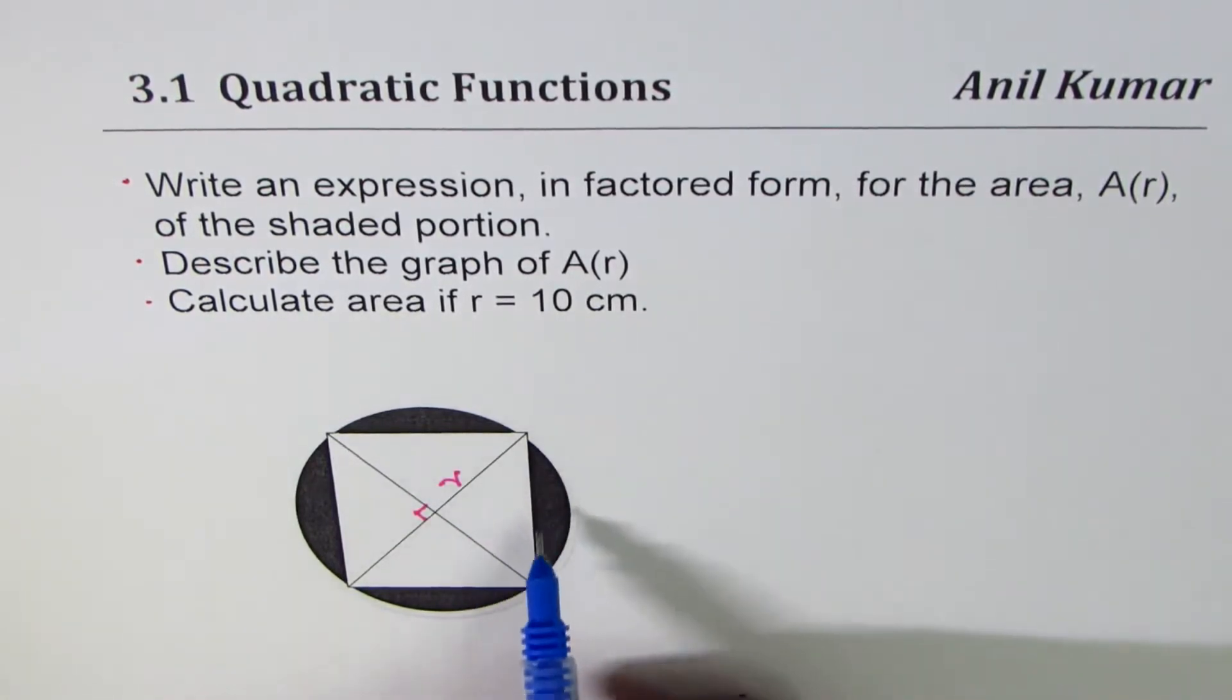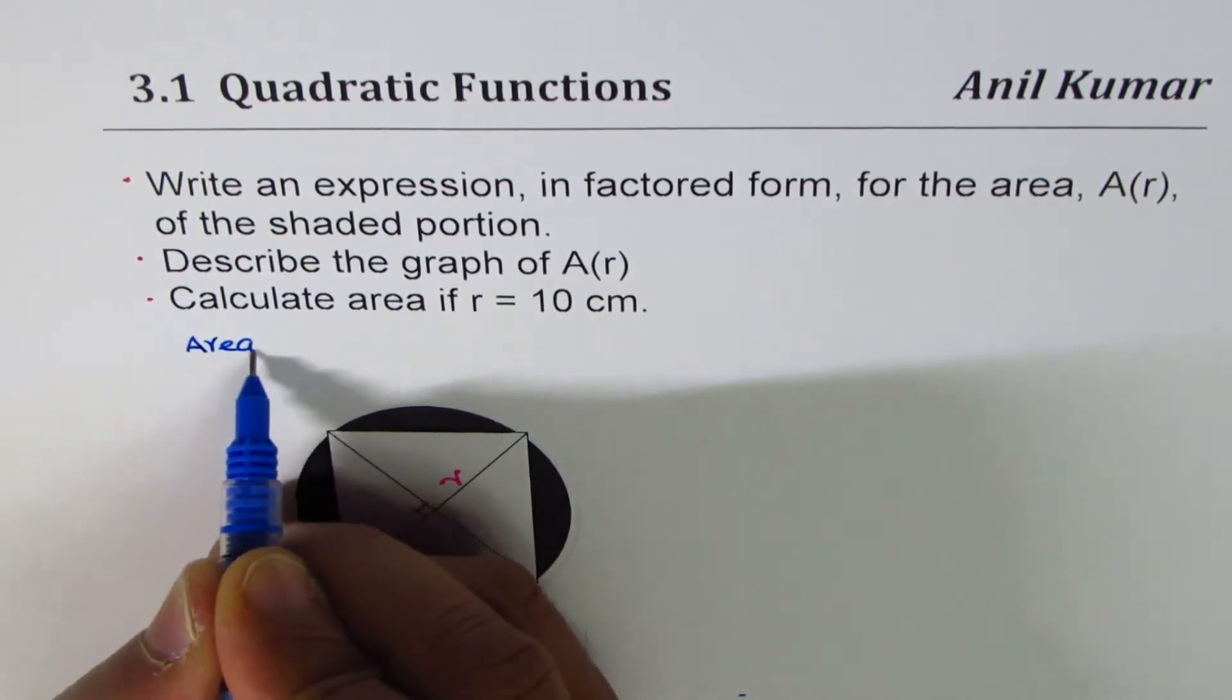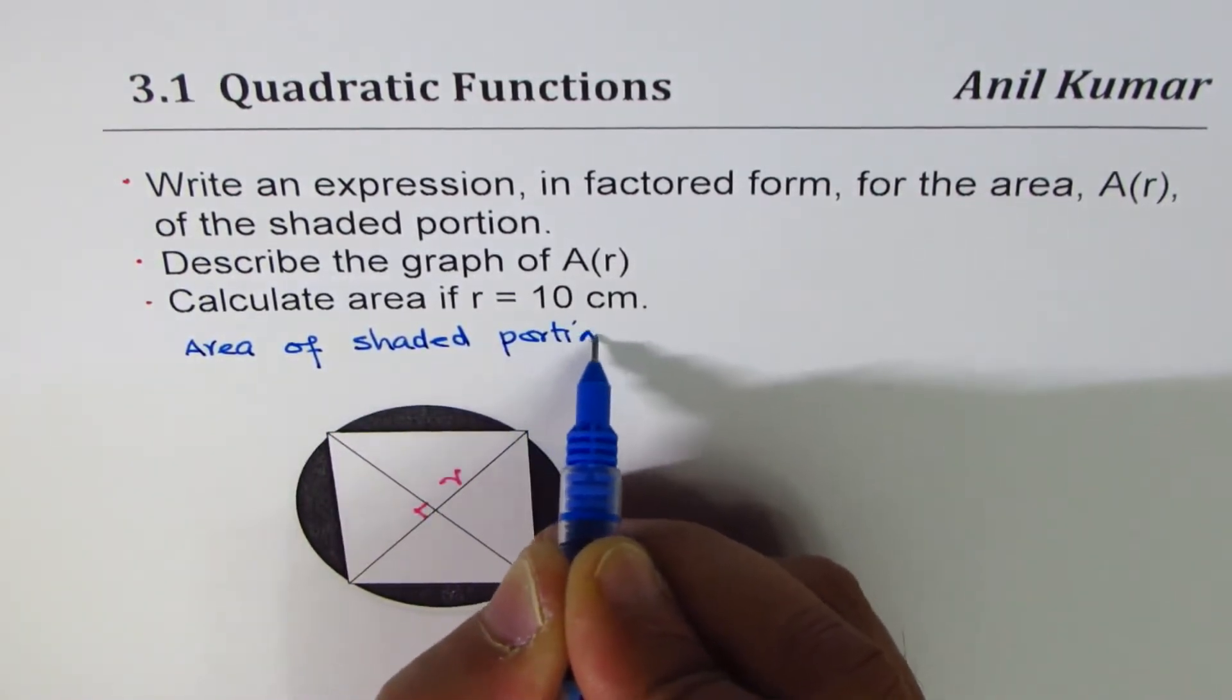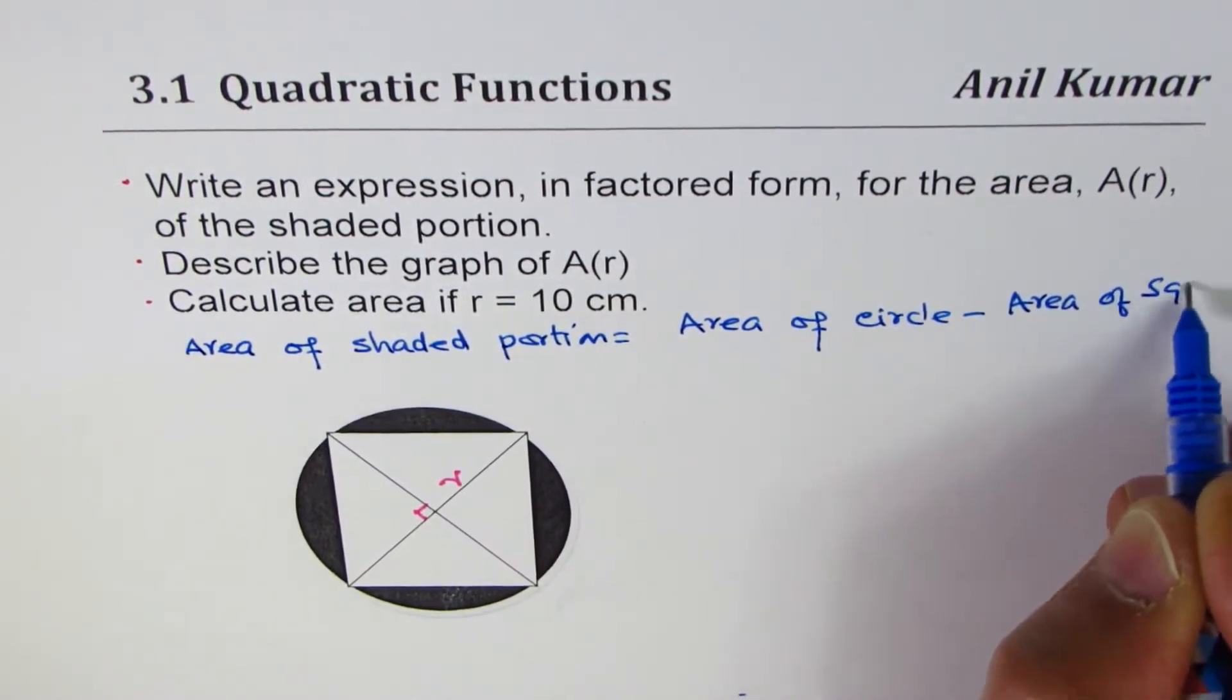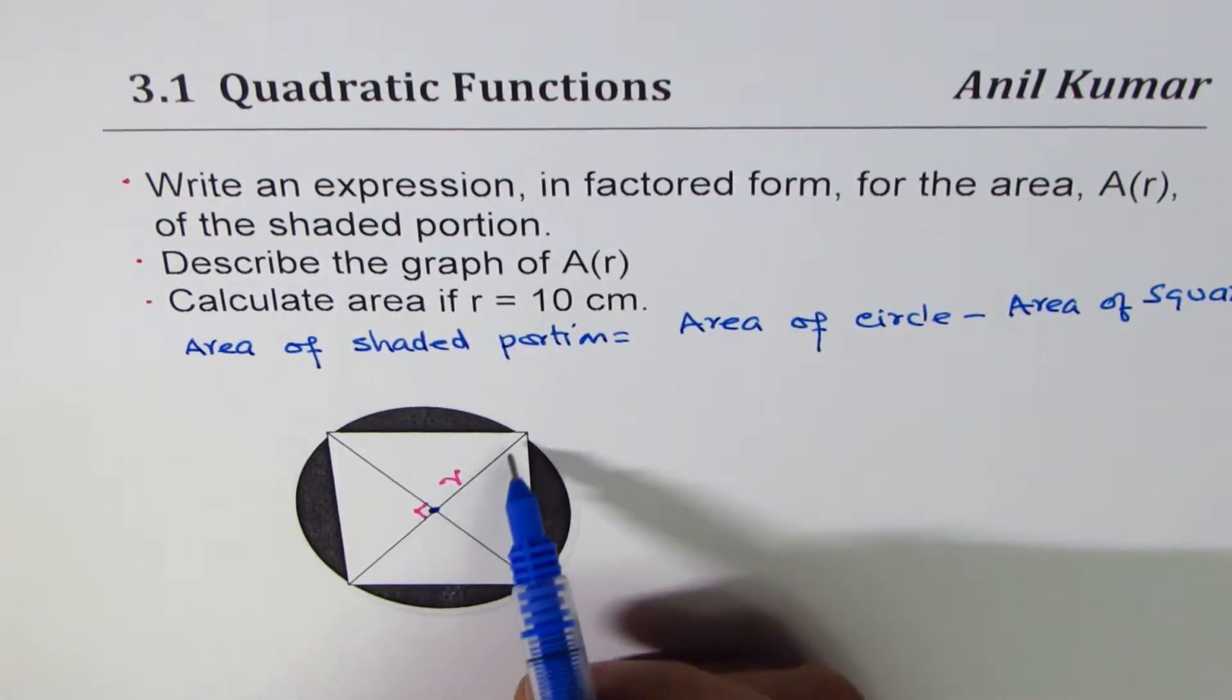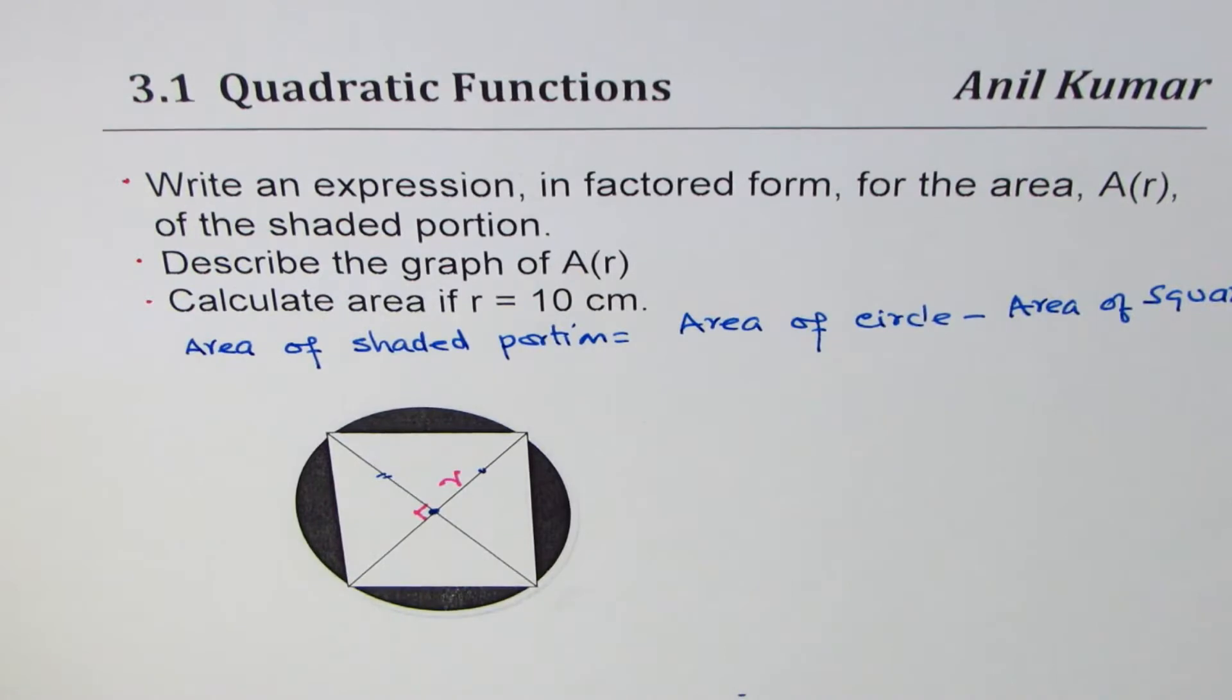Let's begin with the area of circle, then take away area of the square to get area of shaded portion. We know this is a square because these two sides are equal and they are at 90 degrees, and all the sides are equal - square diagonals intersect at 90 degrees.